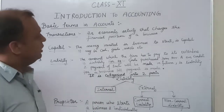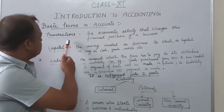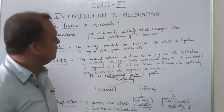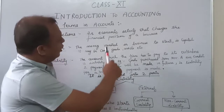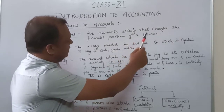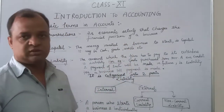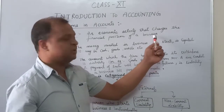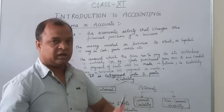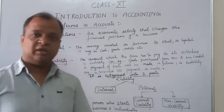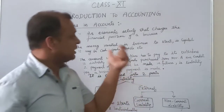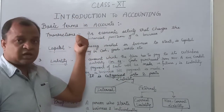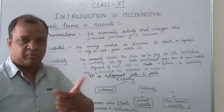Here on the board I have mentioned the first term, which is transaction. The definition of transaction as written is: an economic activity that changes the financial position of a business. I know that everyone till now knows what a business is and what economic activity is, as I have explained these in one of my previous lectures.